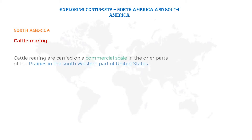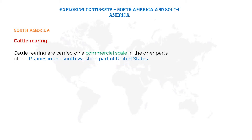Cattle rearing is carried on a commercial scale in the drier parts of the prairies in the southwestern part of the United States. Cattle rearing is the process of keeping, feeding, breeding, and giving medical care to cattle animals. These animals are very useful for human beings, hence it became the main occupation of the drier parts of the prairies in the southwestern parts of the United States.